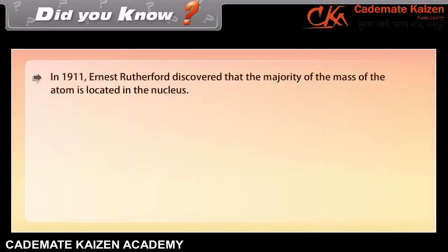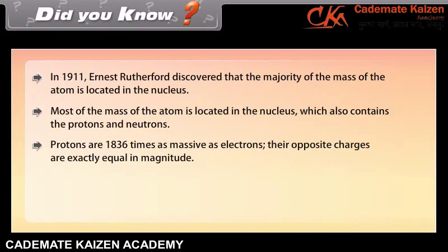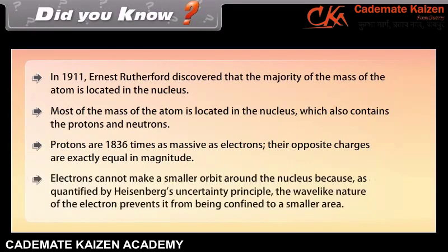Did you know: in 1911, Ernest Rutherford discovered that the majority of the mass of the atom is located in the nucleus, which also contains the protons and neutrons. Protons are 1836 times as massive as electrons, yet their positive charges are exactly equal in magnitude. Electrons cannot make a smaller orbit around the nucleus because, as quantified by Heisenberg's uncertainty principle, the wave-like nature of the electron prevents it from being confined to a smaller area.